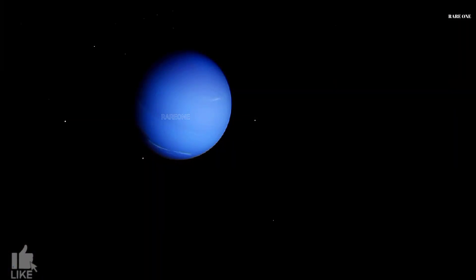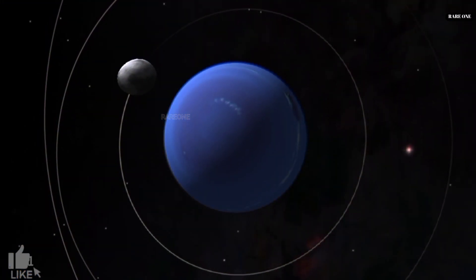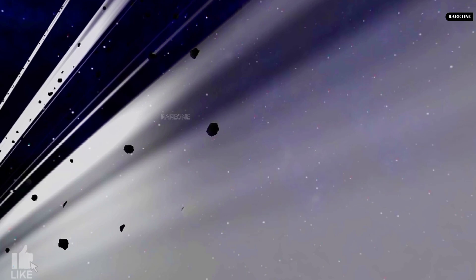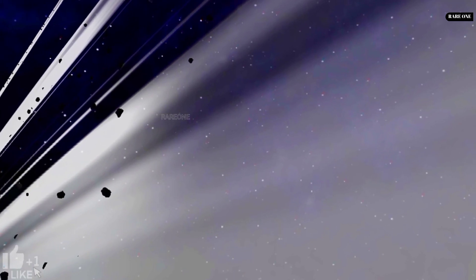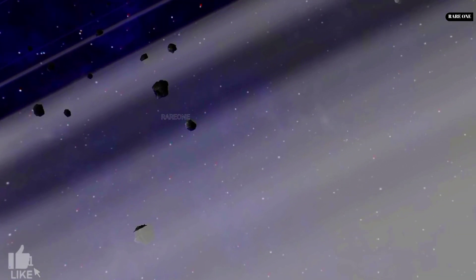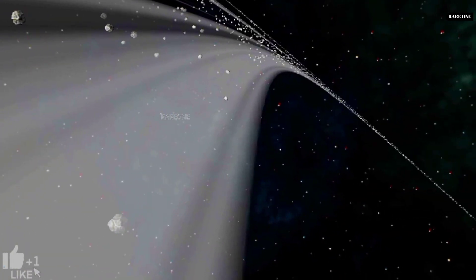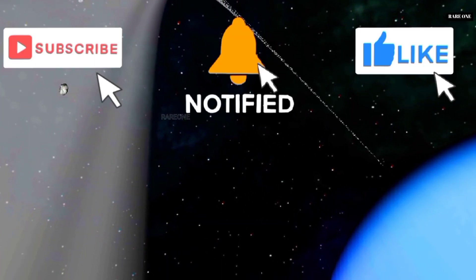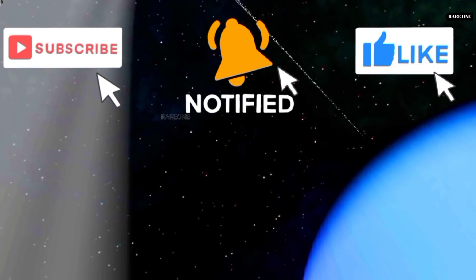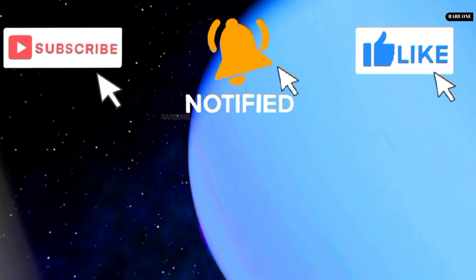From its dramatic blue hues and supersonic winds to its captured moon and enigmatic ring arcs, Neptune is undoubtedly one of the most fascinating destinations in our cosmic backyard. Although it may seem like a remote and alien world, studying this ice giant continues to teach us valuable lessons about the formation and evolution of our solar system.